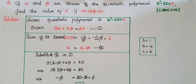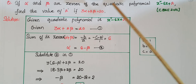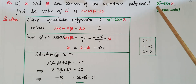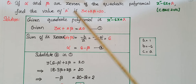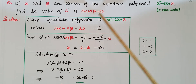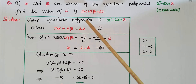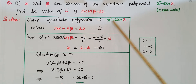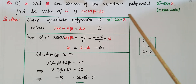Hello everyone, today I am going to tell the solution of this problem. If alpha and beta are zeros of the quadratic polynomial x squared minus 6x plus a, find the value of a, if 3 alpha plus 2 beta is equal to 20. So here, the given quadratic polynomial is x squared minus 6x plus a.